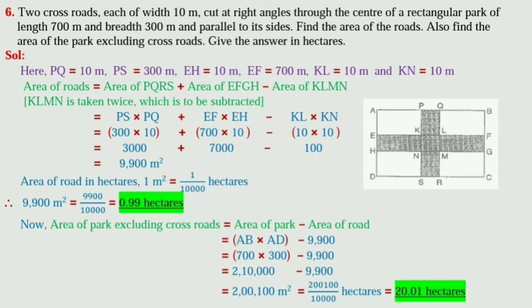Now, here PQ is equal to 10 meter, PS is equal to 300 meter, EH is equal to 10 meter, EF is equal to 700 meter, KL is equal to 10 meter and KN is equal to 10 meter is given.